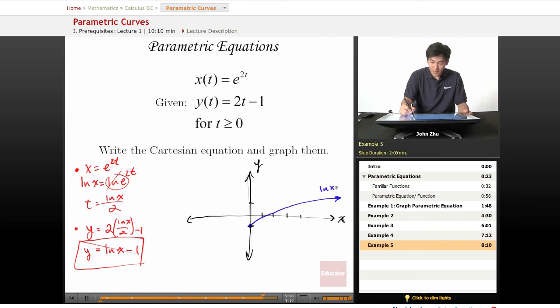This is ln of x minus 1. And please note that t here is greater than or equal to 0, which means that our bounds are restricted by this bound.